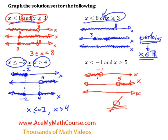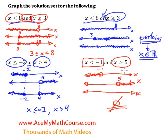Does that make sense? Basically, smaller than negative 1 is part of x is smaller than negative 1, but it's not part of x is greater than 5. So we erase that area for our final solution. And x is greater than 5 is not in common with the first, so the intersection between them consists of nothing at all. Now I suggest that you try a few questions yourself — graph a few solution sets for compound inequalities — and good luck.